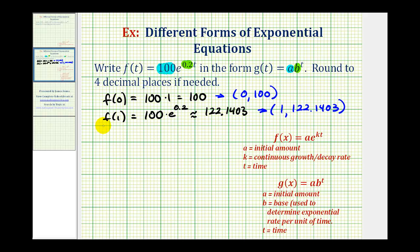Now we can find g of t. Again, we already know that a is going to equal 100. So we have g of t equals 100 times b raised to the power of t.